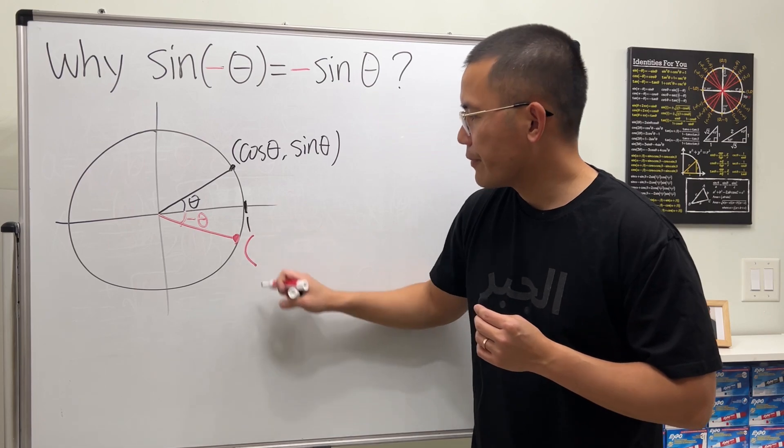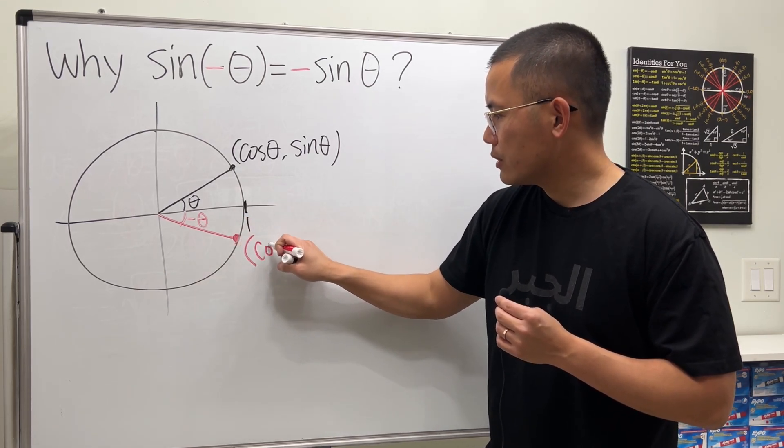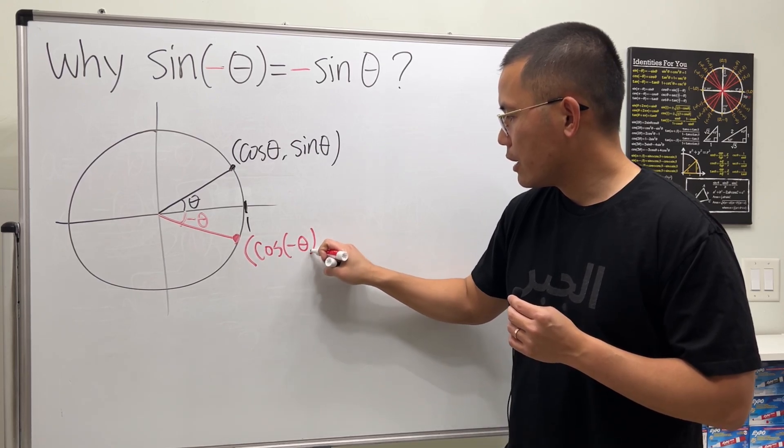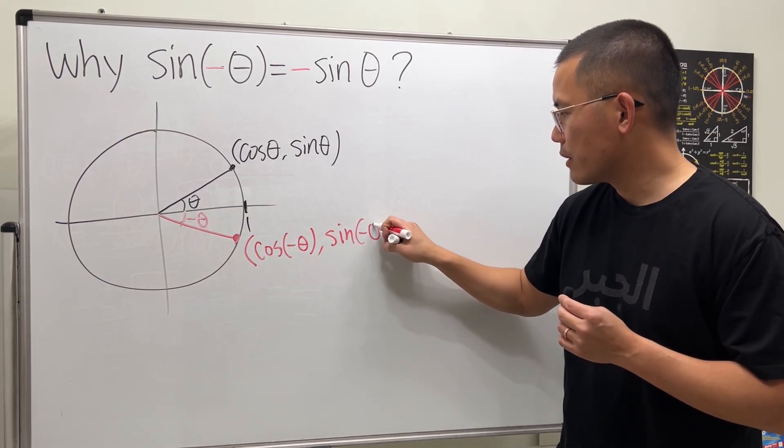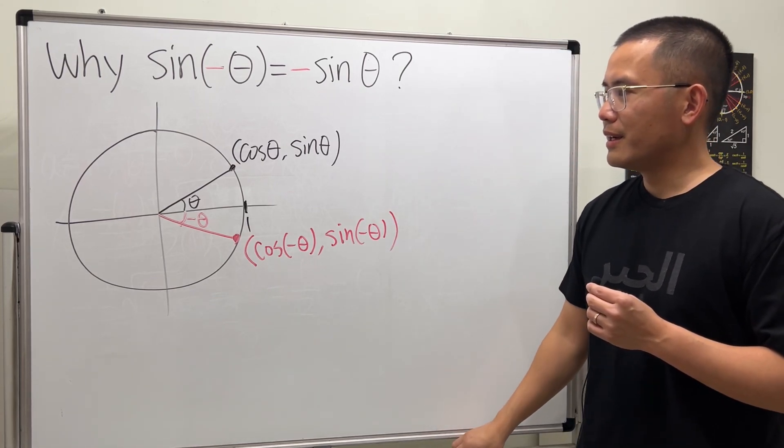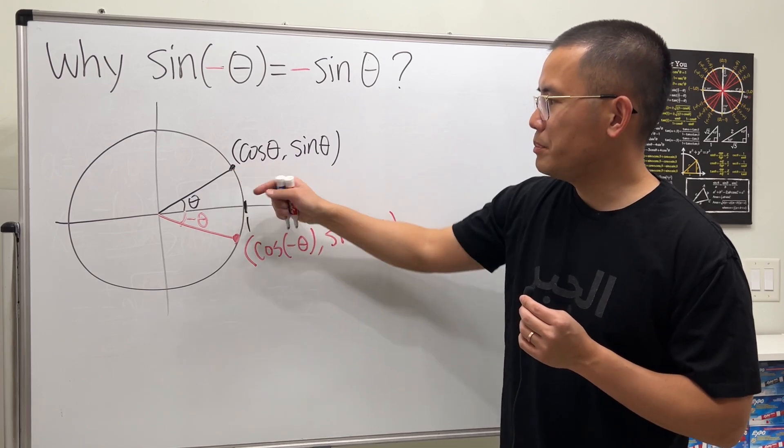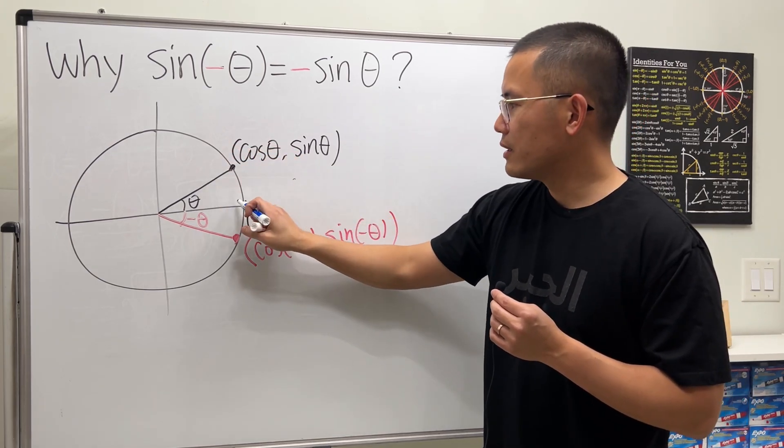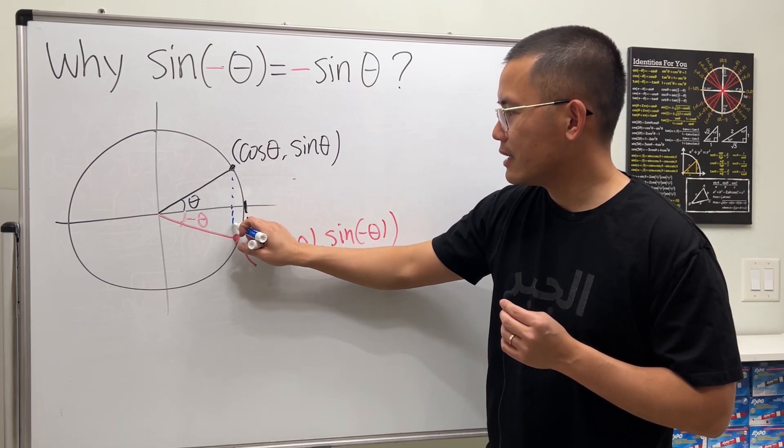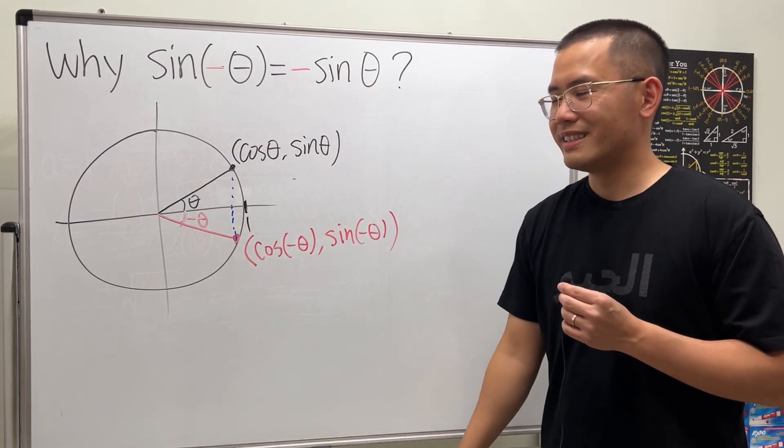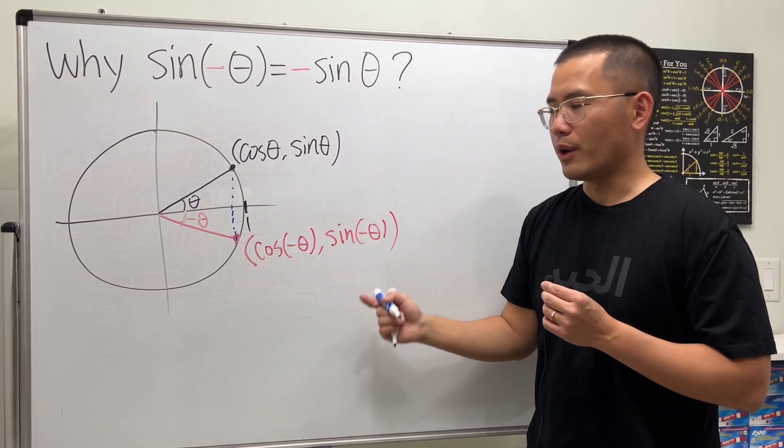So right here you can see that cosine of negative theta is the x value. And then sine of negative theta is the y value here. But now, have a look right here. This much is positive because it's above the x-axis. And if you go down instead, we'll get to this point. So in fact, this much is positive y value. This much is just negative y value.